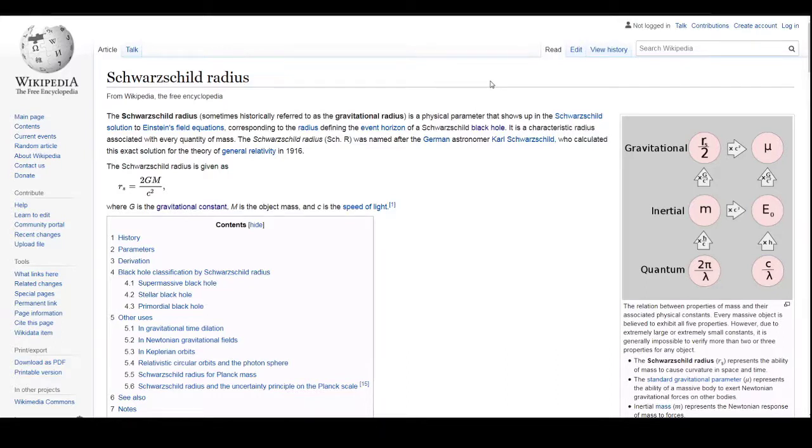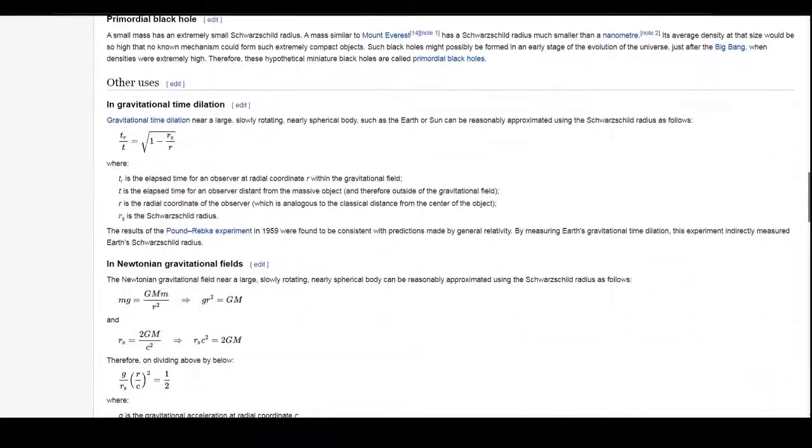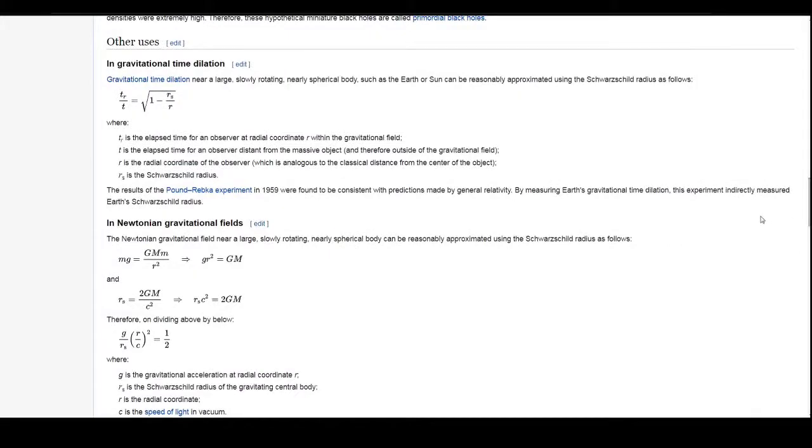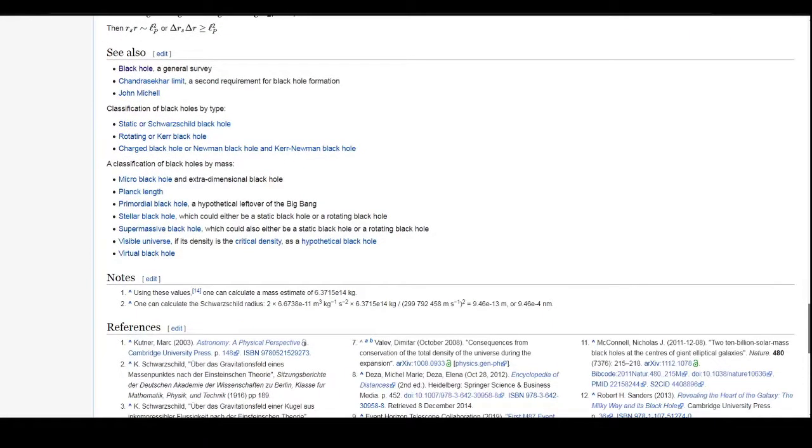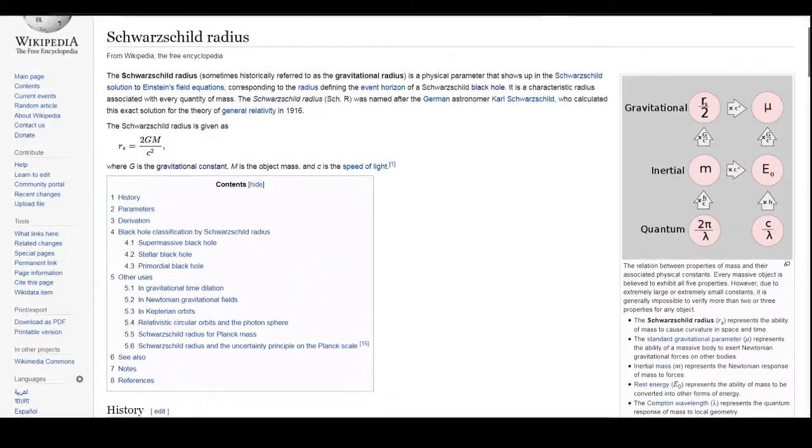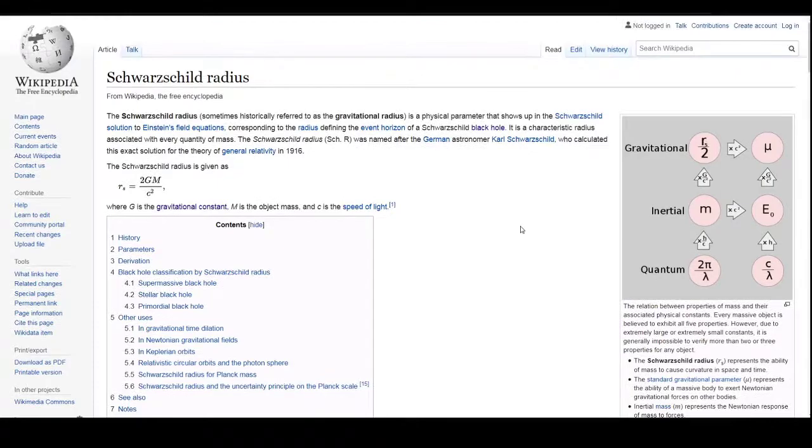Notice that the way that we just derived was not really proper because when we try to derive it properly in physics, we actually have to include the idea of relativity. So if you're interested, you can go and check out the work from the internet. So we are just lucky or coincidentally to get the result to be the same using this simple formula of escape velocity.